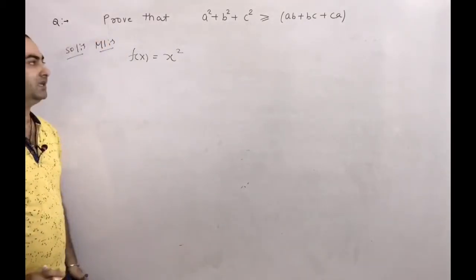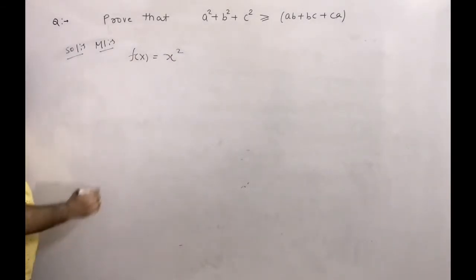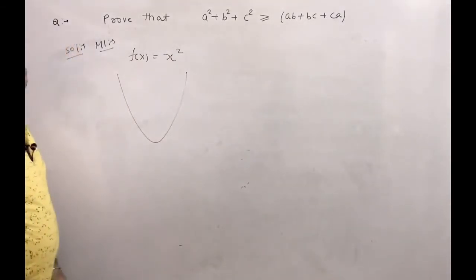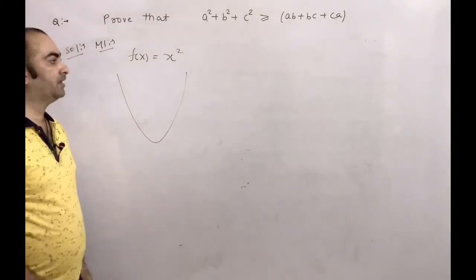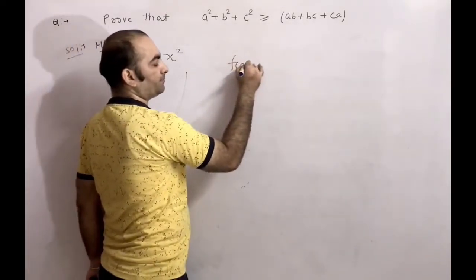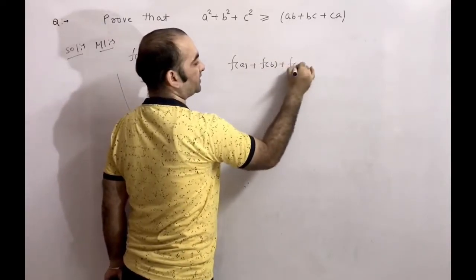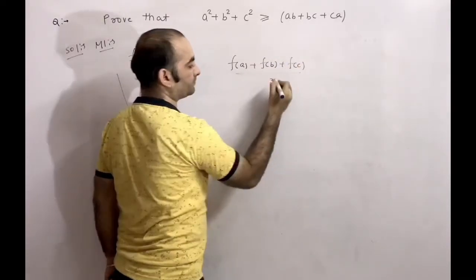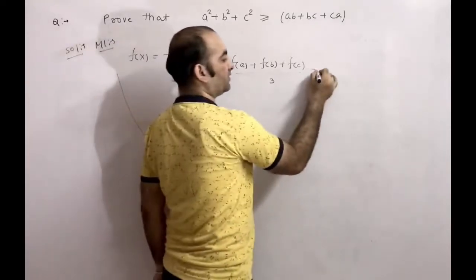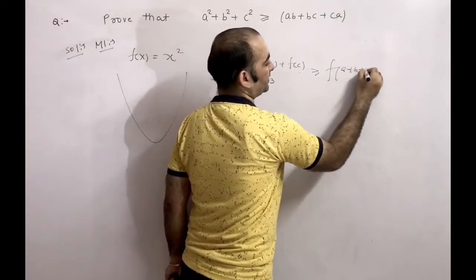f(x) = x² is a convex function, which is upward. According to Jensen's Inequality: [f(a) + f(b) + f(c)] / 3 is greater than or equal to f[(a + b + c) / 3].